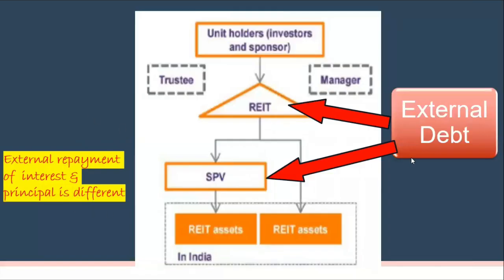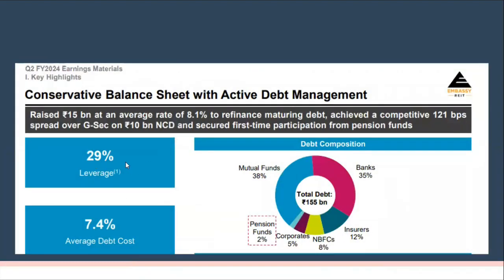This internal debt from the REIT to the SPV should not be confused with external payments. There is also external debt that REITs can borrow — at the REIT level as well as at the SPV level. The 29% leverage shown here comprises debt given by mutual funds, banks, insurance companies, and NBFCs to the REIT — not the equity funds that the REIT infuses into the SPVs. This is the total external debt composition.